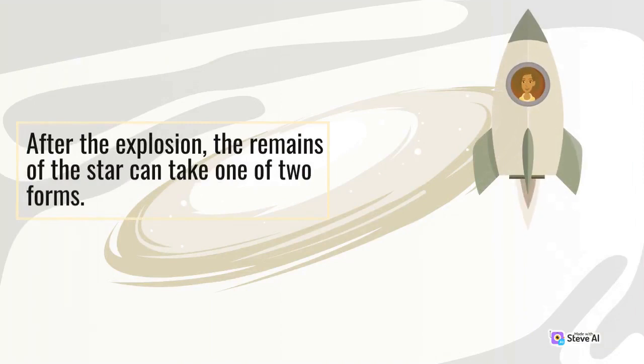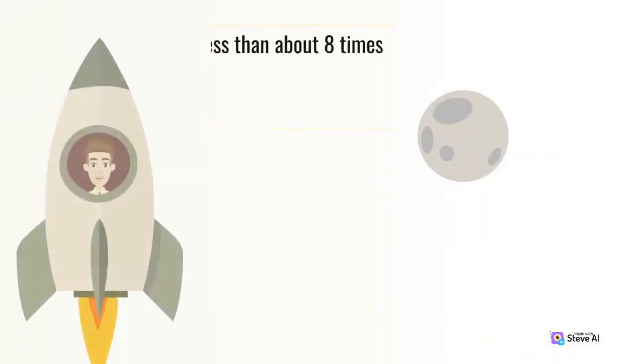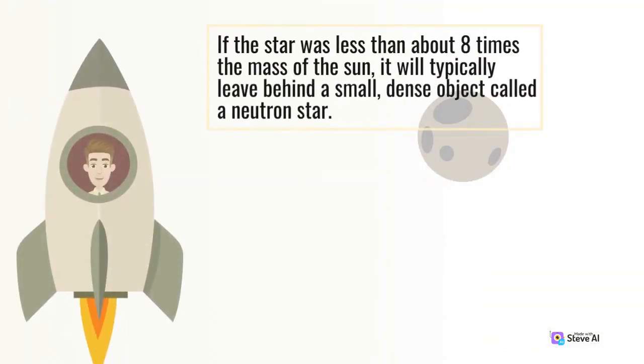After the explosion, the remains of the star can take one of two forms. If the star was less than about eight times the mass of the Sun, it will typically leave behind a small, dense object called a neutron star.